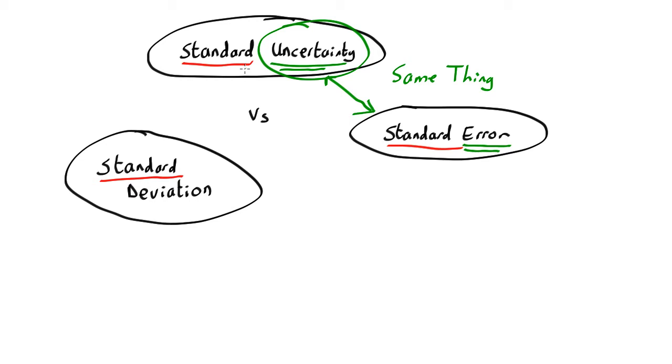Now basically a standard deviation is one way of measuring the standard uncertainty. It's actually called the type A method for measuring the standard uncertainty. There's also a type B method. So there are two different ways you can work out what the standard uncertainty is, the type A and the type B. And this is official terminology. It's in the official standards, the GUM standard.